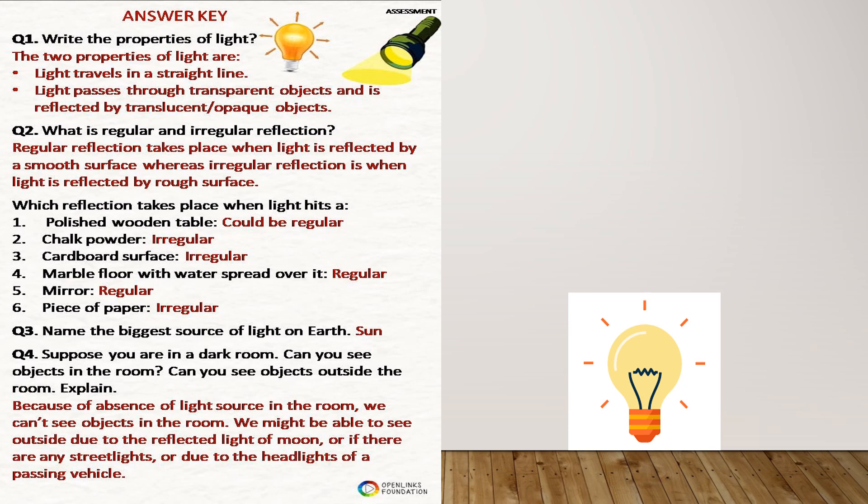Now, what are the properties of light? Light travels in a straight line. Light passes through transparent mediums. It is reflected back from opaque objects. Translucent objects also reflect light but not as much as opaque objects — only some light rays travel through translucent objects. We also have to understand regular and irregular reflections, which we will explore in our session.